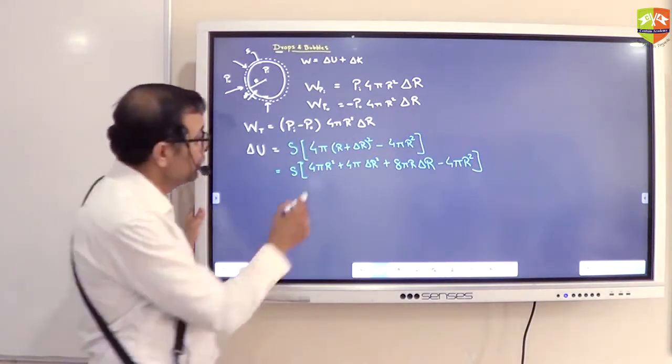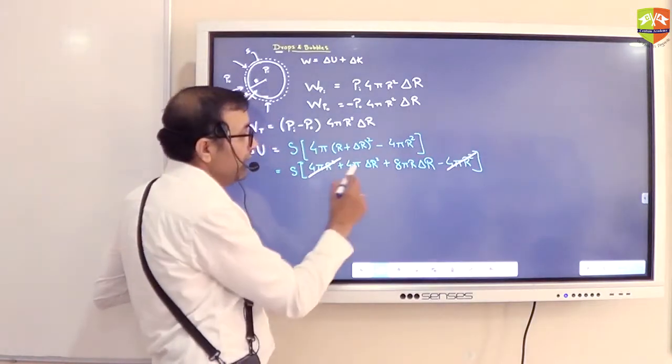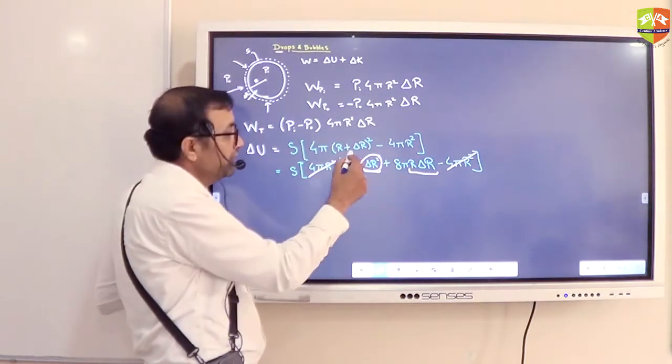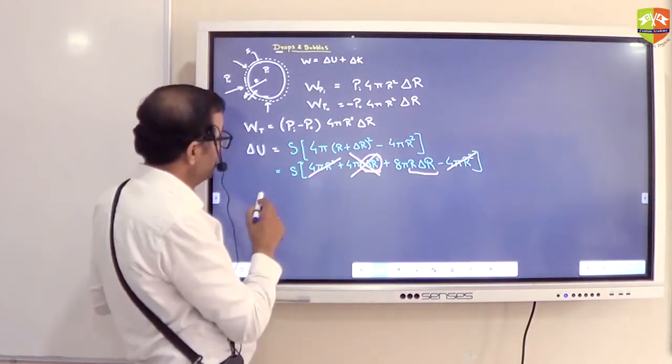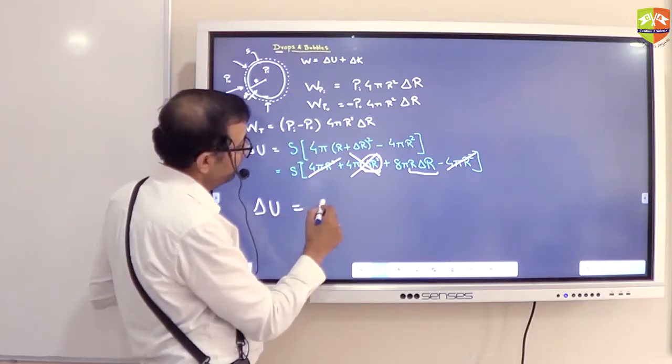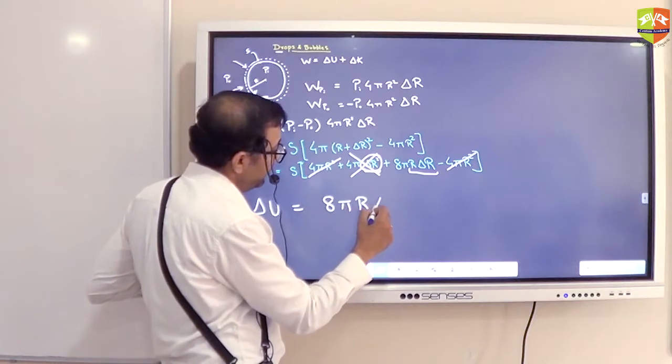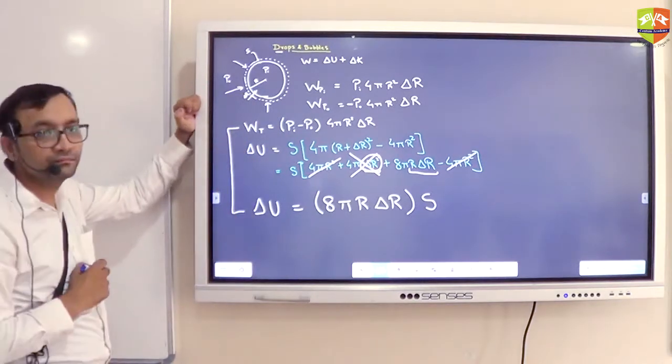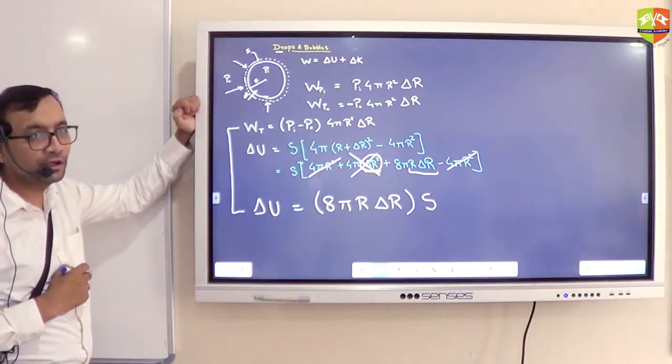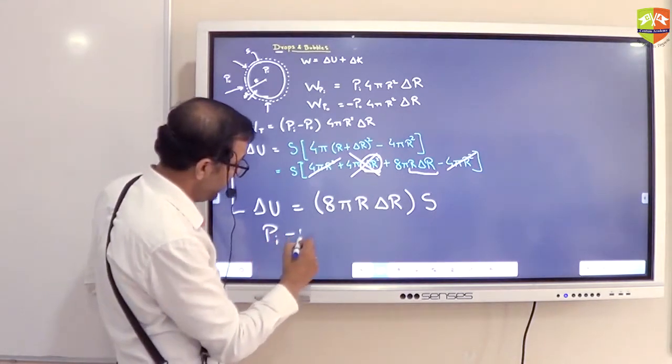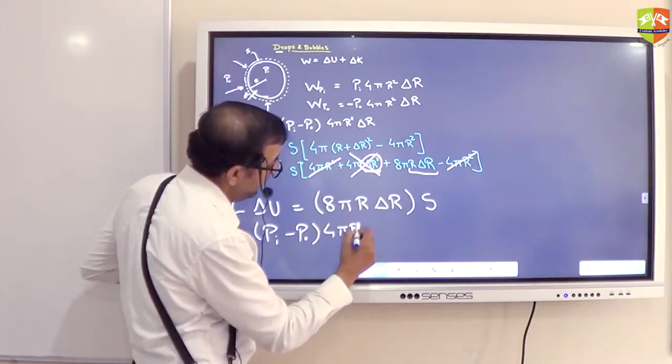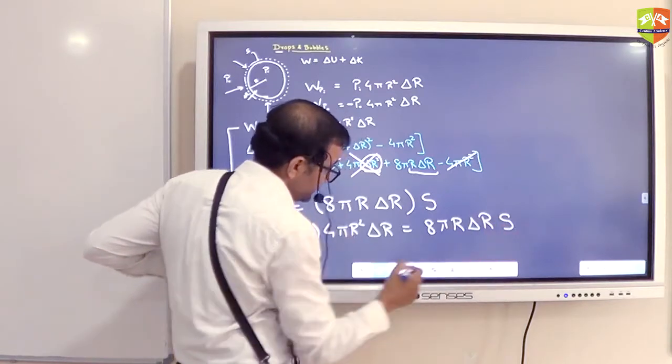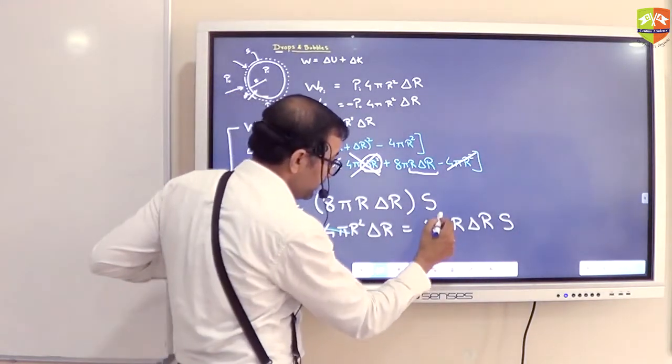So 4πR² cancels and delta R is very small so delta R² is negligible compared to R into delta R. So change in potential energy will come out to be 8πR delta R into S. So this should be equal to that according to work energy theorem. So (PI minus P₀) into 4πR² delta R equals 8πR delta R into S. So you can see that terms cancel and I am getting PI minus P₀ equals 2S by R.